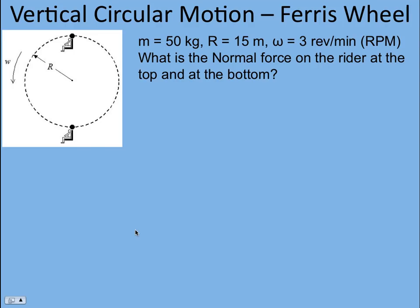Let's look at something you might be familiar with, a ferris wheel. In other words, something that's in circular motion, but the plane of the circle is in the vertical orientation.